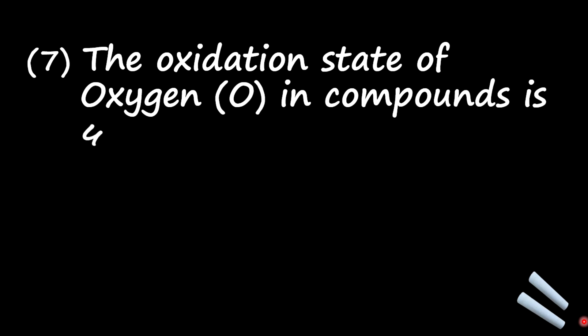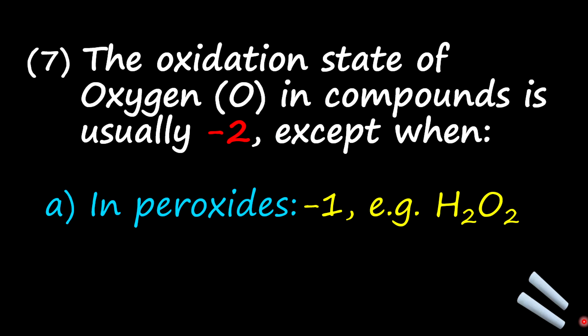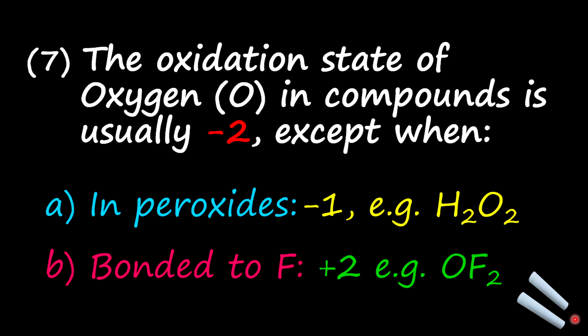Let's look at this other rule. And this rule is saying that the oxidation state of oxygen in compounds is usually negative two, except when in peroxides, for example hydrogen peroxide, it is negative one, or when it is bonded to fluorine, it is positive two.